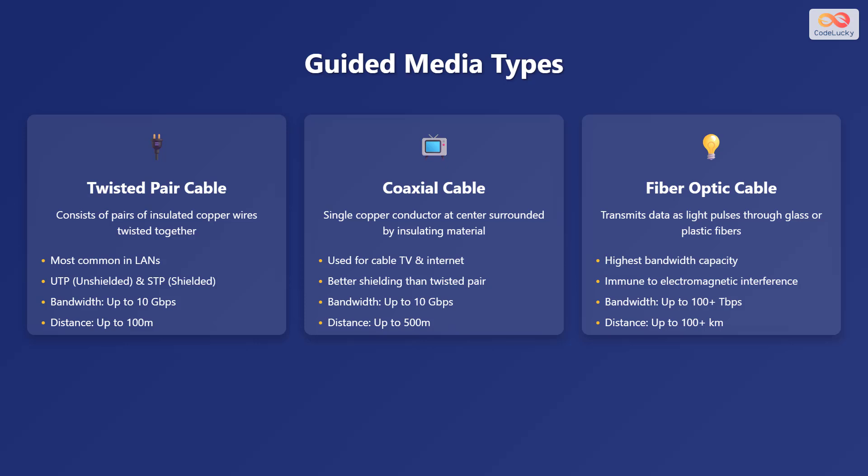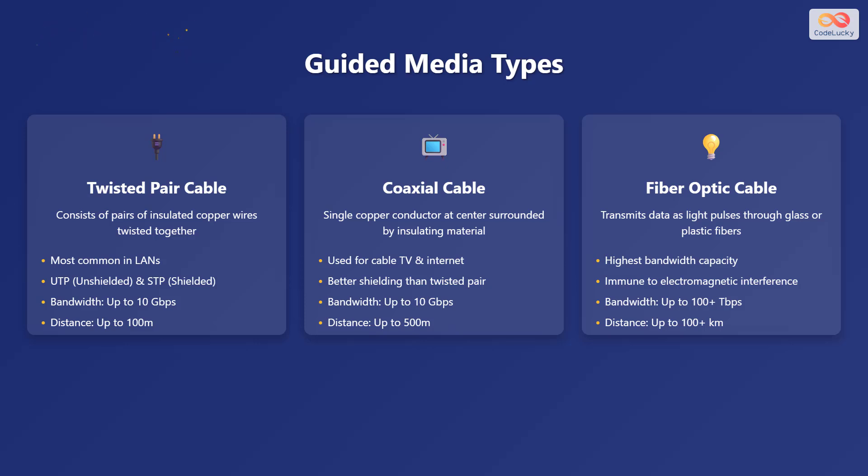Twisted pair cable consists of pairs of insulated copper wires twisted together, commonly used in local area networks or LANs. Coaxial cable features a single copper conductor at the center, surrounded by insulating material, commonly used for cable television and internet connections. Fiber optic cable transmits data as light pulses through glass or plastic fibers, providing the highest bandwidth capacity and immunity to electromagnetic interference.